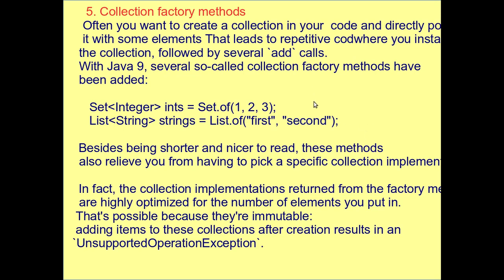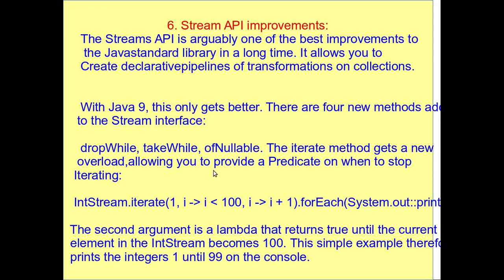Fifth, collection factory methods: the existing approach has a simple collection factory method, but after creating a collection your code leads to repetitive boilerplate — collection creation followed by several add calls. Next, Stream API improvement: the Stream API is arguably one of the best improvements in the Java standard library in a long time.